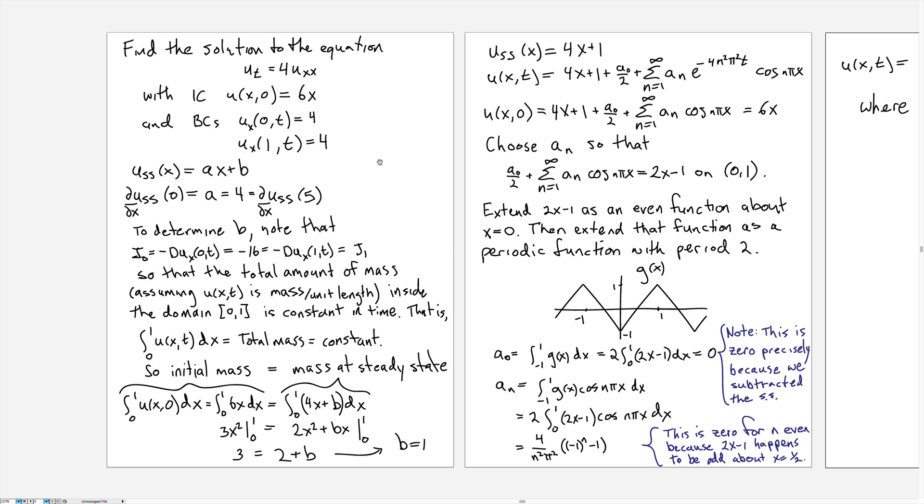Here's an example of the diffusion equation with a non-homogeneous boundary condition where we're specifying the slope at the end, so this is a non-homogeneous Neumann boundary condition.